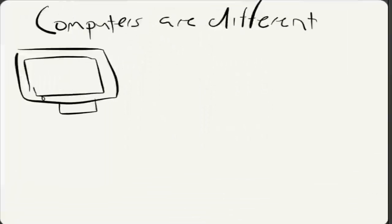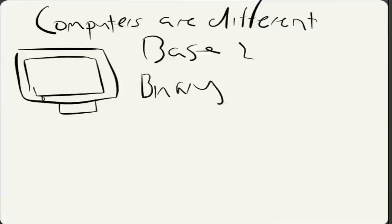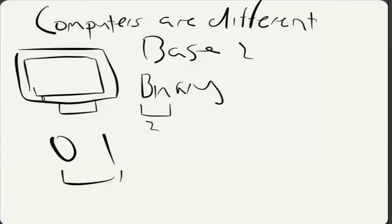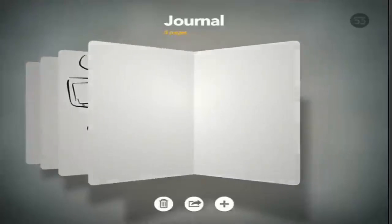You probably know it as Binary, and we get Binary from BIN meaning 2. So computers can only use 2 digits, and these digits are 0 and 1. They can represent their numbers using just 0s and 1s. So, why do they count in Base 2? Why don't they use Base 10 like us humans? Well, there's a very reasonable explanation for that, and that is because all our electronic devices...